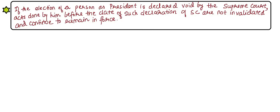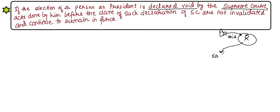Another important fact: if the election of a person as President is declared void by none other than the Supreme Court, then the acts and work done by this President before such declaration are not considered invalid. All acts done before such a declaration will continue to remain in force and will be valid.